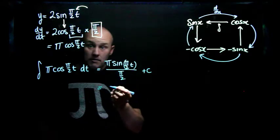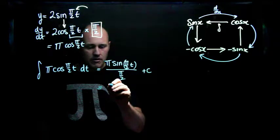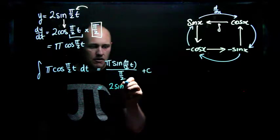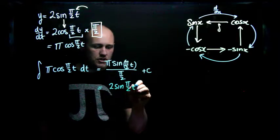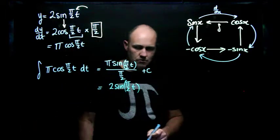And of course, dividing by π/2 is the same as multiplying by 2/π. The π's cancel out, I'm left with 2 sine π/2 t, which leads of course to this rule which I've got over here, and then I'll do one more example.